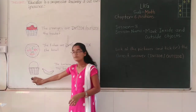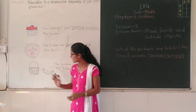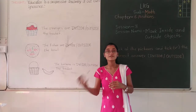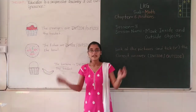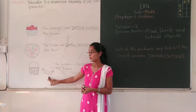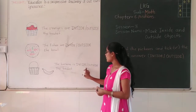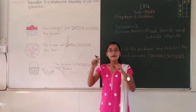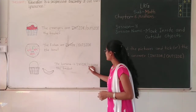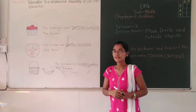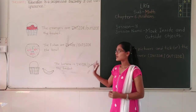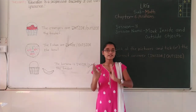Next, look at here. I have drawn one basket and one banana. Now tell me, where is the banana? Inside the basket or outside the basket? Look at here — outside the basket, right? So the banana is outside the basket. Like this, you have to pick only the correct answer.